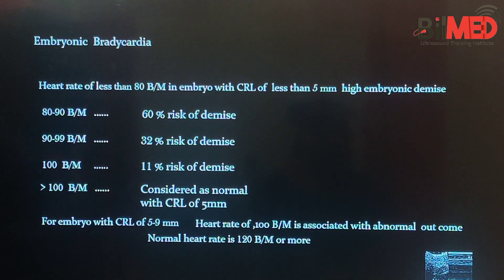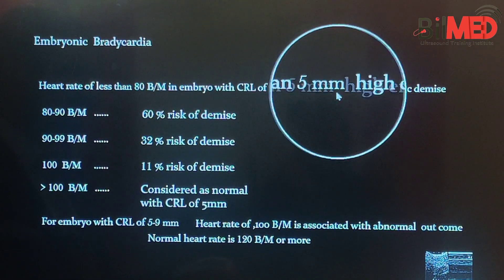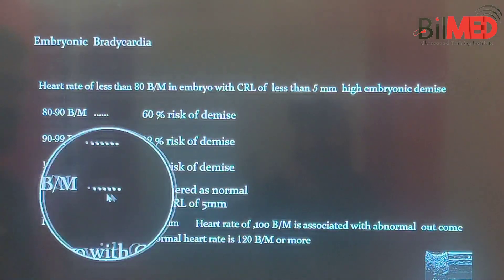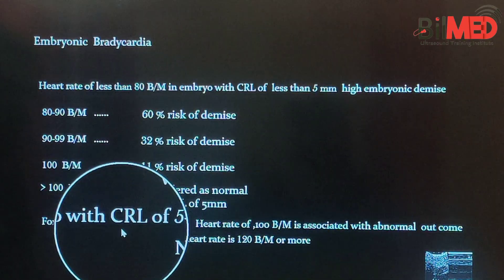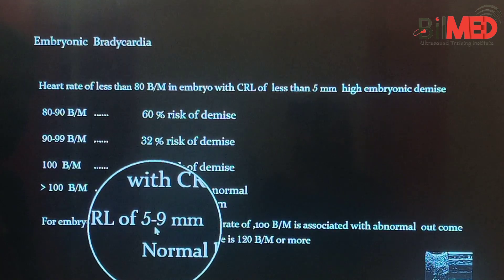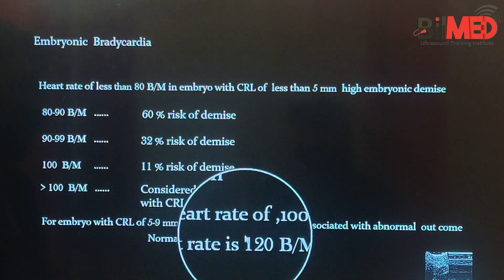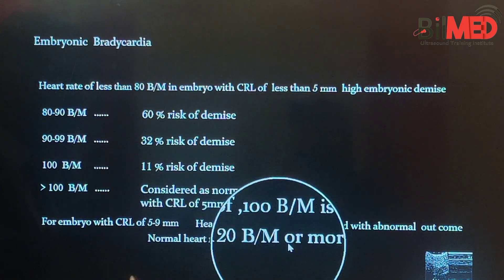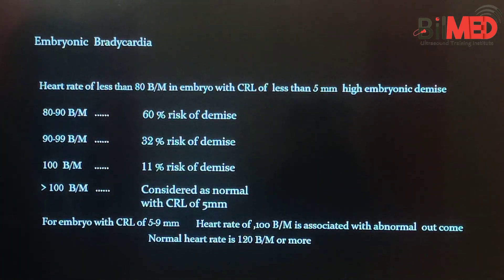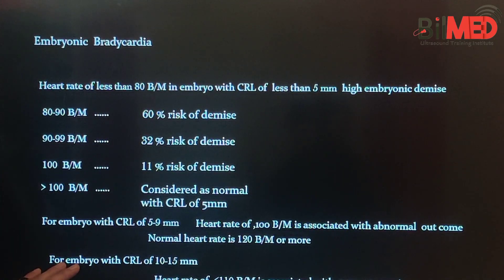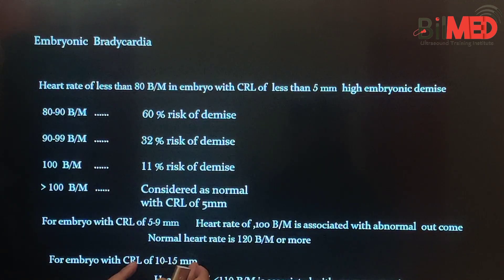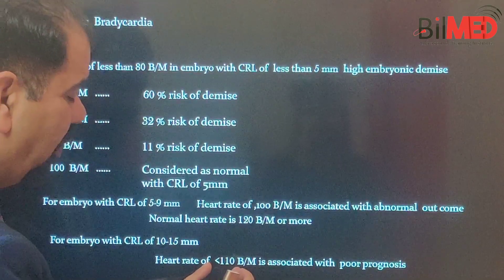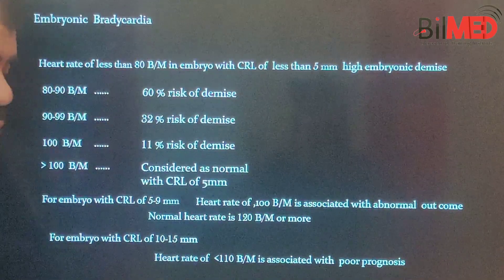When CRL is less than 5 millimeters, heart rate should be more than 100 beats per minute. As the CRL advances from 5 to 9 millimeters, the heart rate must increase and should be more than 120 beats per minute. When the embryo is growing and the CRL is in the bracket of 10 to 15 millimeters, a heart rate of less than 110 beats per minute is associated with poor prognosis.